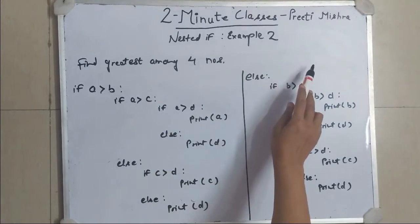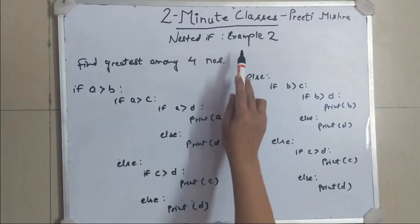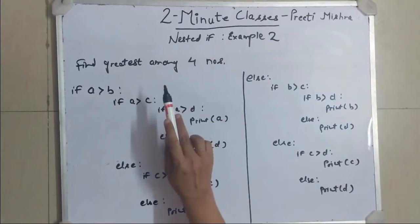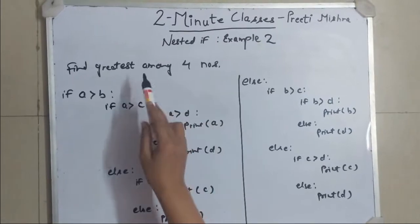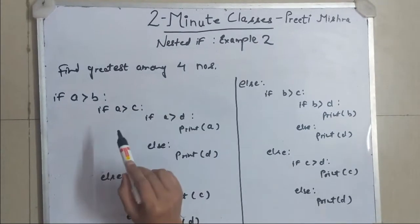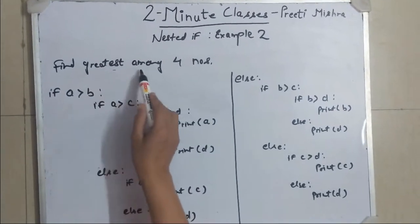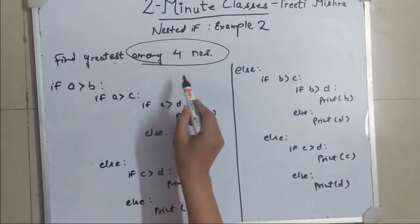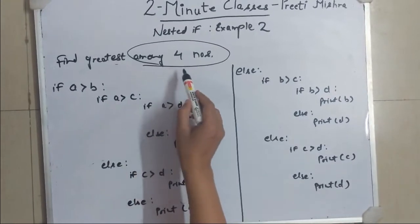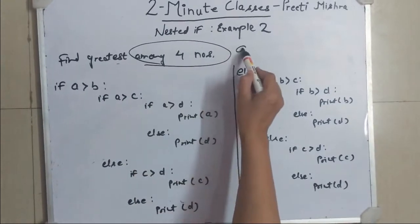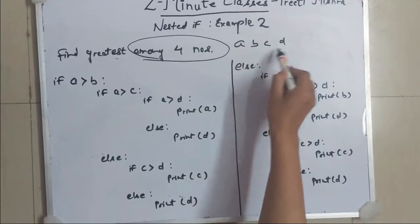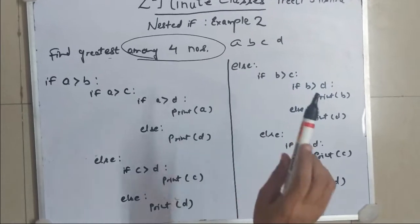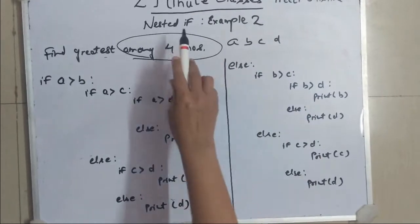Welcome to 2 Minute Classes. We will discuss an example of nested if. We are going to take forward the previous example and find the greatest among 4 entered numbers. Suppose I enter the 4 numbers as A, B, C and D. I want to find the greatest among them, so I am going to use nested if.